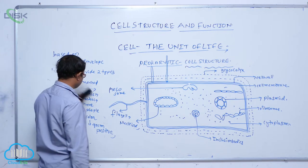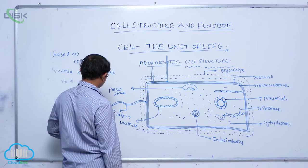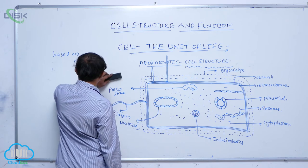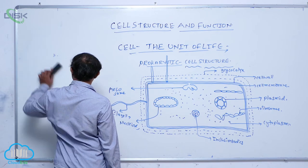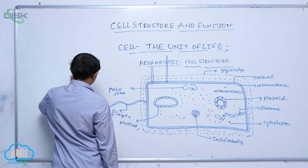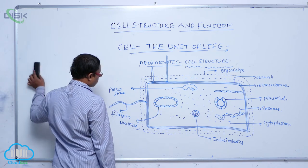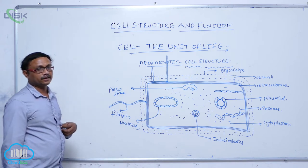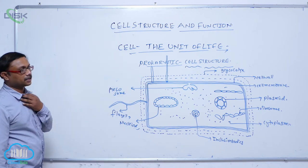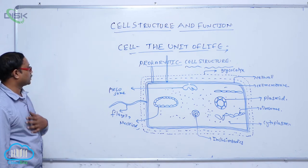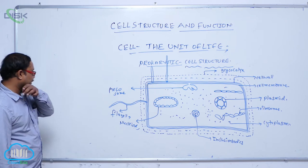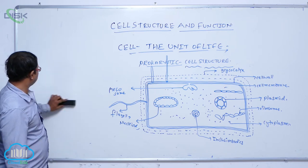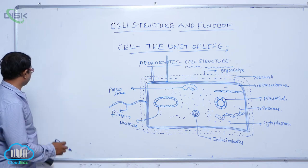This is based on the cell envelope. If the cell envelope appears purple in color, it is known as gram positive. If the cell envelope does not appear purple in color, it is known as gram negative.